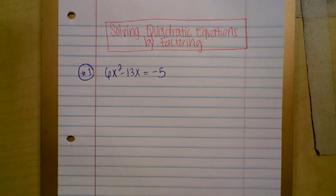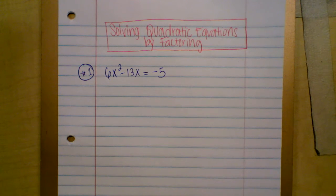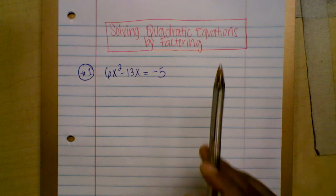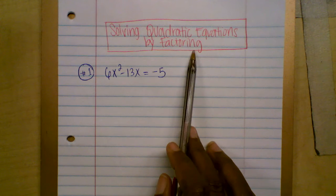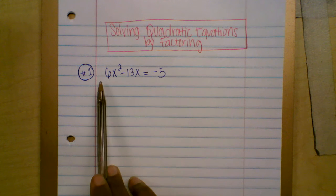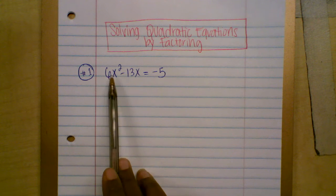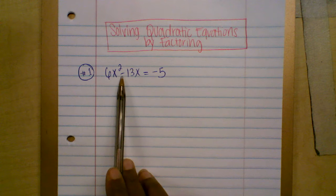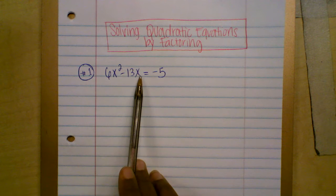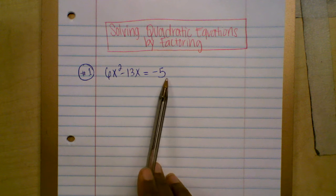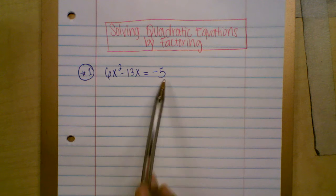Hi. So in this video, I'm going to show you how to solve a quadratic equation by factoring. And the first quadratic equation I have here is 6x squared minus 13x equals negative 5.